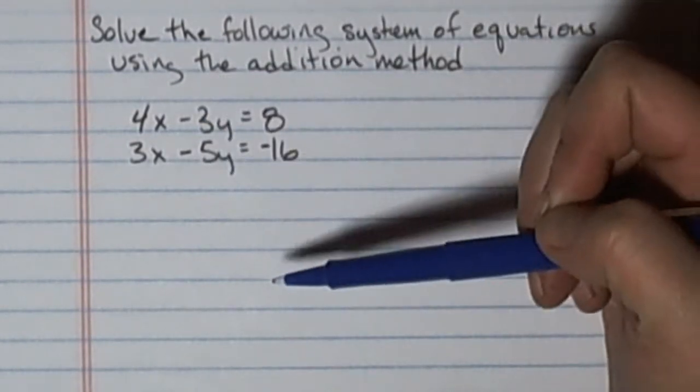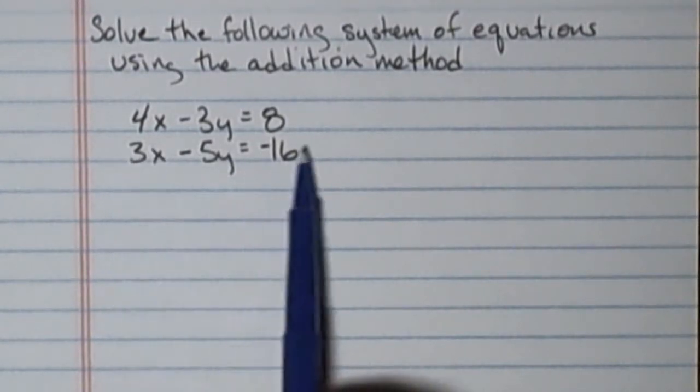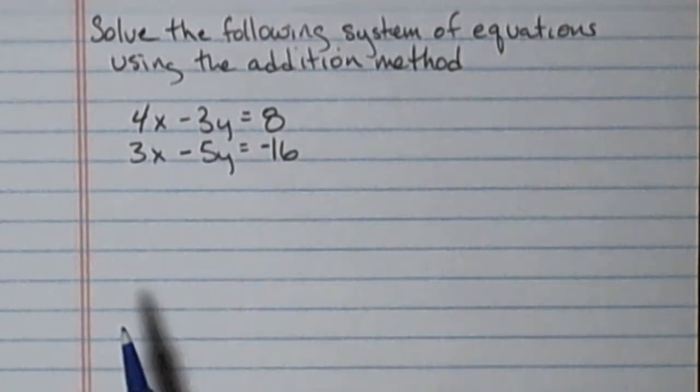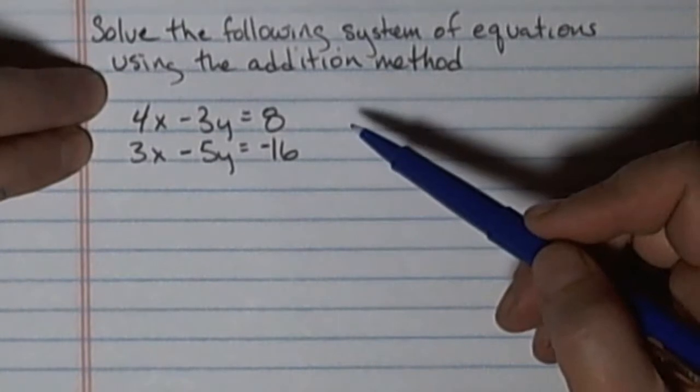At this point nothing would drop out and there's no one number that I can multiply either equation by so that a variable would drop out. So in this case I'm going to have to multiply both equations by something.